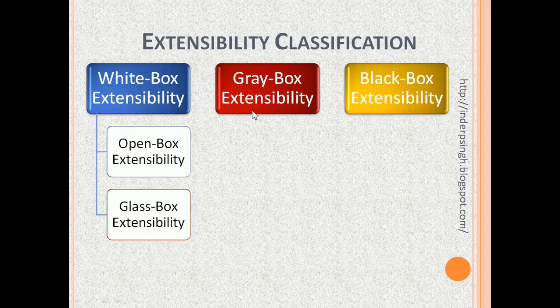The next class is gray box extensibility. This allows the software system to be extended without having the original source code, but having the executable software program. The program executable contains metadata which allows an extension to be written.